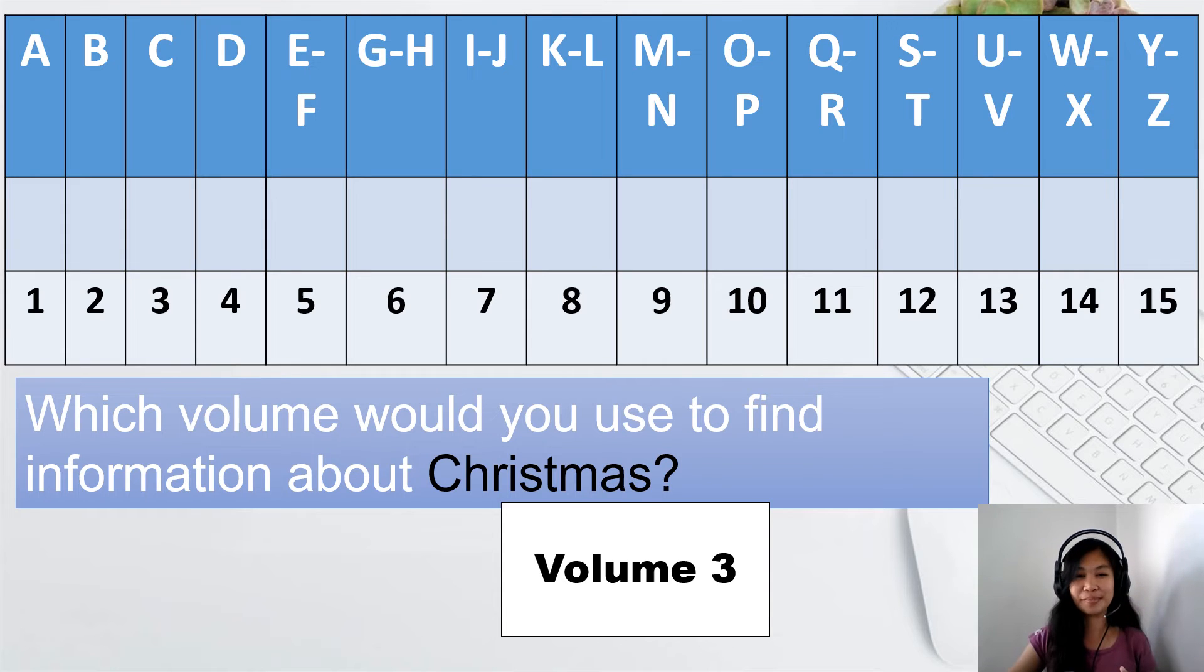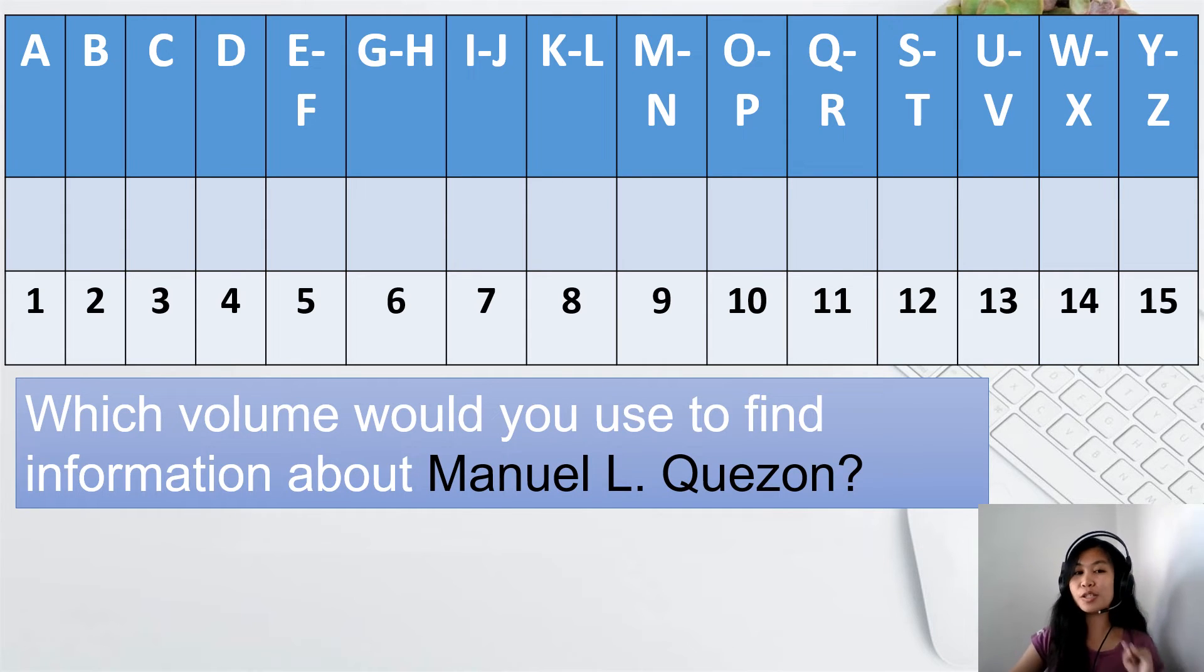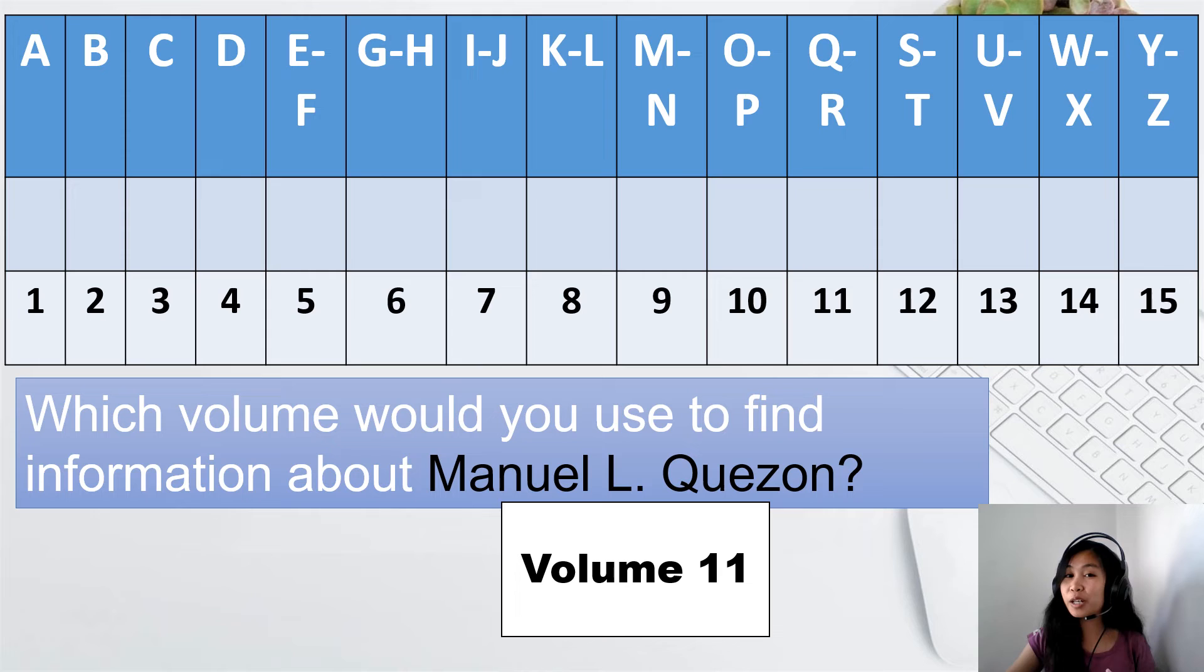Number 2. Which volume would you use to find information about Manuel L. Quezon? Volume number? Very good. Volume number 11. Why volume number 11? Very good. Because Manuel L. Quezon's last name is Quezon. And it's a rule that if you're looking for a person's information, you should start with his or her last name.